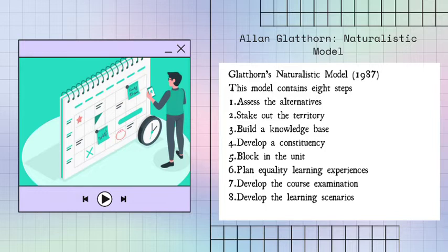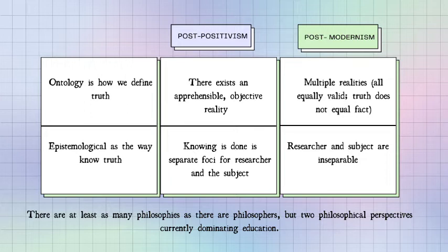There are at least as many philosophies as there are philosophers, with philosophical perspectives currently dominating education. In post-positivism, ontology defines truth as an apprehensible objective reality, while in postmodernism, ontology sees truth as multiple realities, all equally valid — truth does not equal fact. In post-positivism, epistemologically, knowing is done separately from the researcher and the subject, while in postmodernism, the researcher and subject are inseparable. Understanding societal beliefs about where assessment comes from is important.